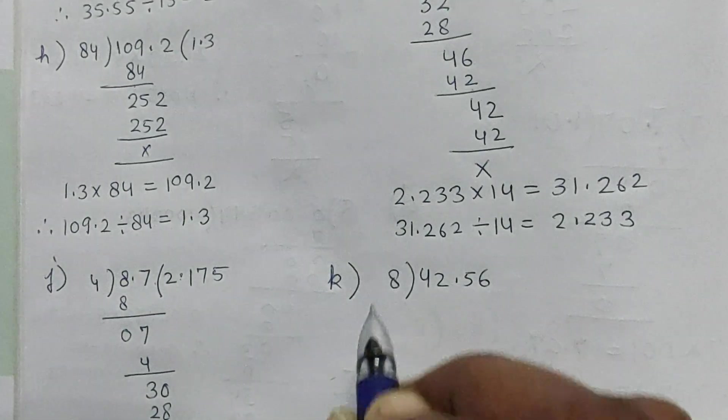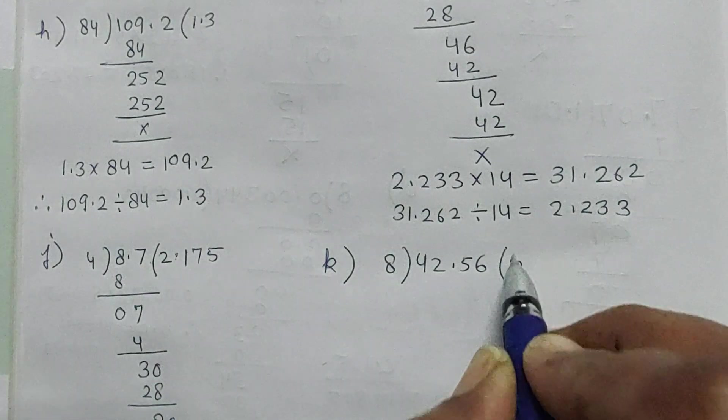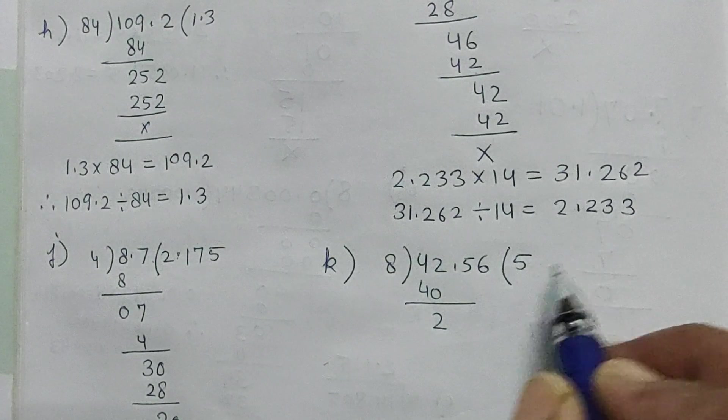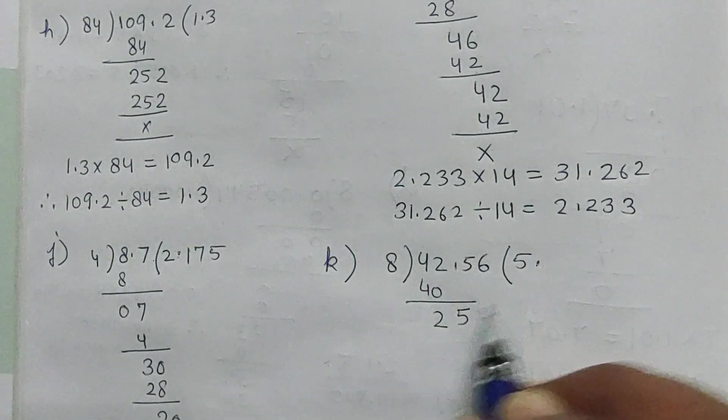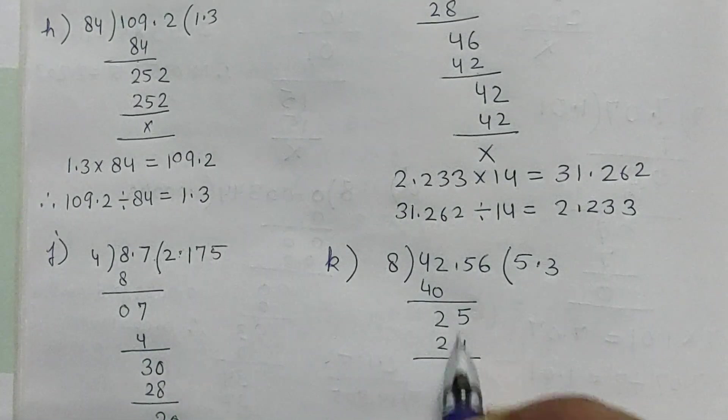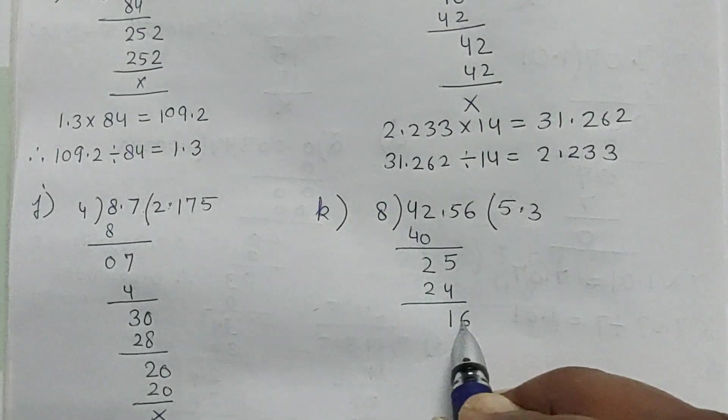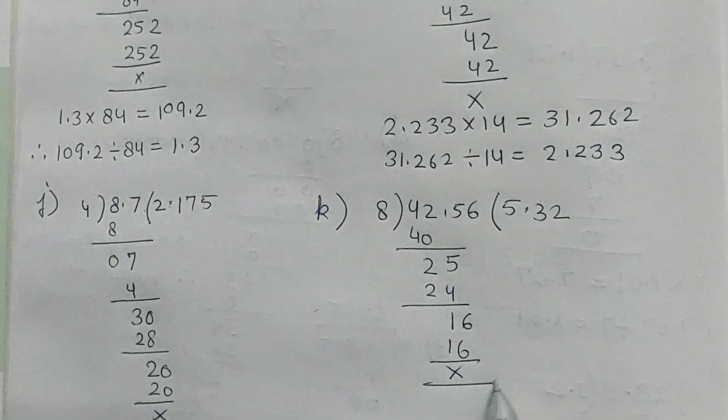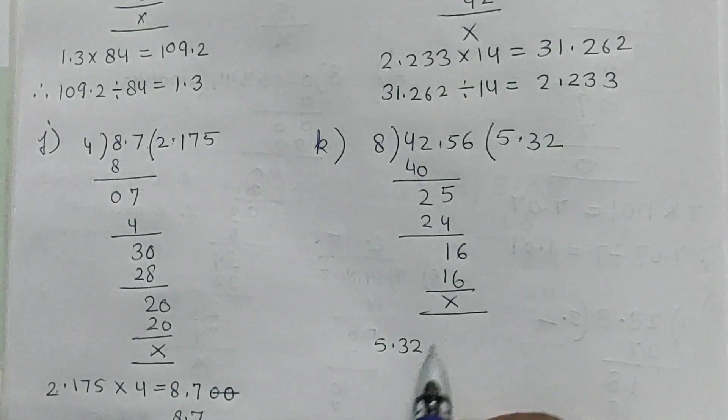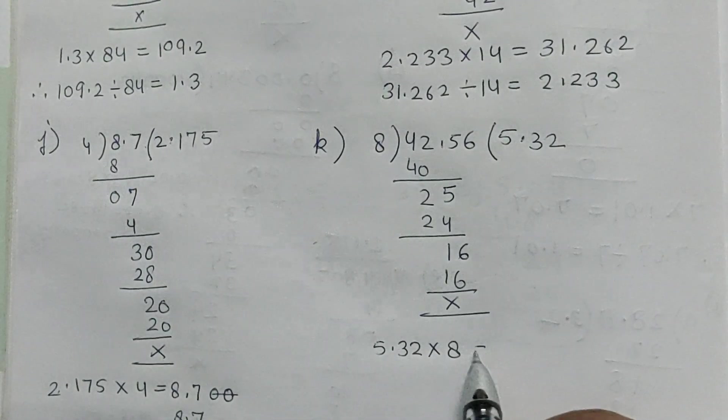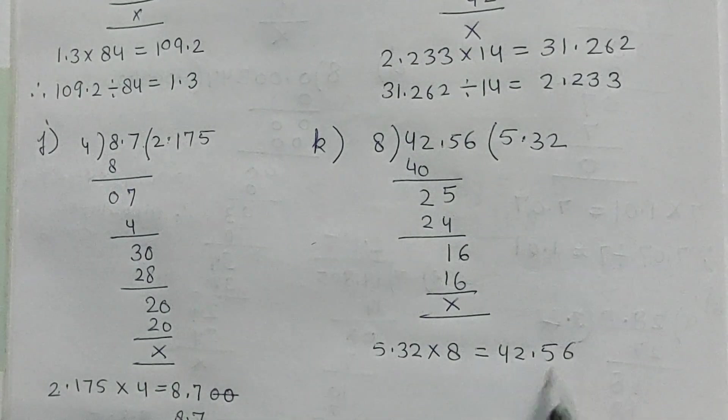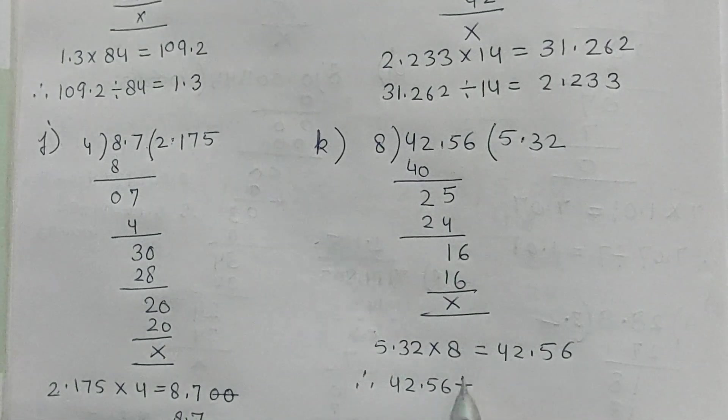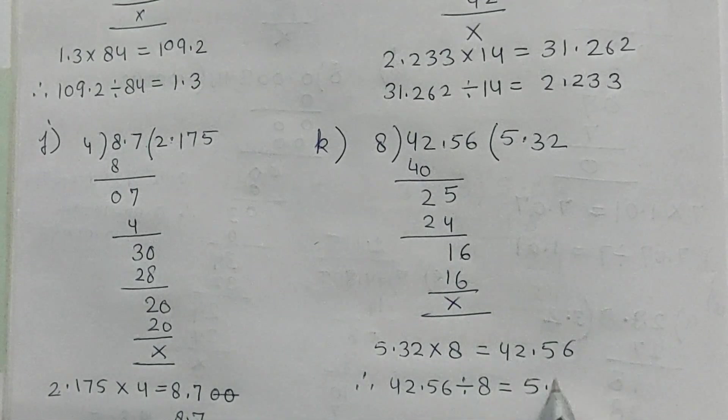2.175 times 4 is equal to 8.7. Therefore, 8.7 divided by 4 is equal to 2.175. Part K: 42.56 divided by 8. So 8 into 5 is 40. 42 minus 40 is 2. Here is the point. Bring down 5. 8 into 3 is 24. 25 minus 24 is 1. Bring down 6. 16. 8 into 2 is 16. Now 5.32 multiplied by 8 is equal to 42.56. Therefore, 42.56 divided by 8 is equal to 5.32.